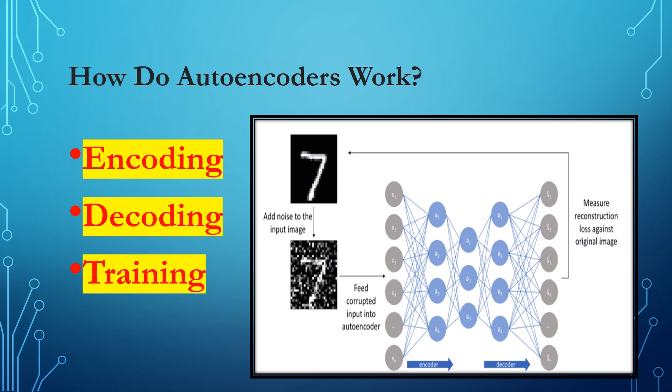Autoencoders follow a simple methodology. First is encoding: the input data is passed through an encoding process which maps the high-dimensional input to a low-dimensional encoded representation, typically involving a sequence of neural network layers. Then comes decoding: the encoded representation is passed through a decoding process, also involving neural network layers, which reconstructs the original input.